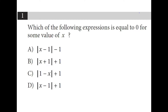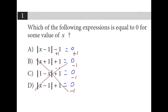Which of the following expressions is equal to 0 for some value of x? If we set these all equal to 0, you have to solve so that the absolute value bracket is all by itself, which means you'll add 1 to both sides here, and for the other 3 you'll subtract 1. The problem is that absolute value is distance from 0, and distance cannot be negative. So all of these would be negative — not possible. That's why A is the answer.